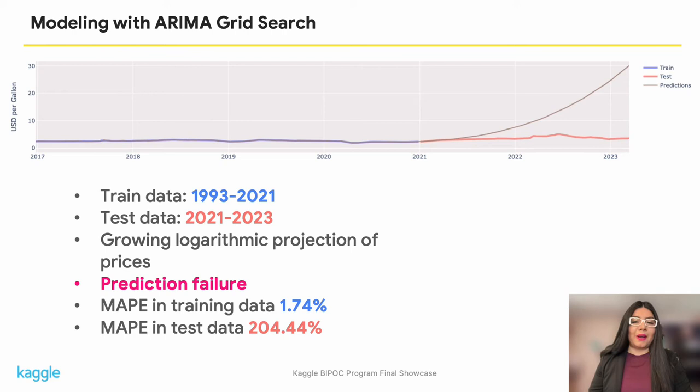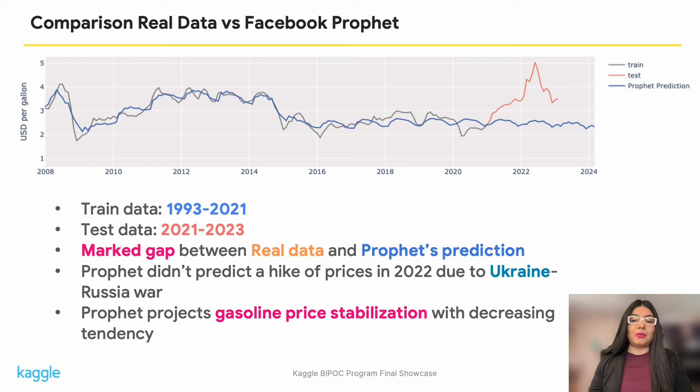The second forecast method was ARIMA. The training data covered part of the COVID-19 period in order to help ARIMA learn behavior during this dramatic event. The real test was to see if it could capture the spike in gasoline prices during the Ukraine-Russia conflict. However, it totally failed, projecting a skyrocketing range of prices — something that could only happen if oil reserves suddenly dried out.